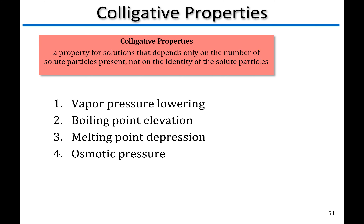So what exactly is a Colligative Property? Colligative Properties are the properties of a solution that depend only on the amount of solute particles present, and not on the actual identity of the solute. We care only about the number of solute particles, not their identity. The four we'll talk about are vapor pressure lowering, boiling point elevation, melting point depression, and osmotic pressure.